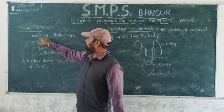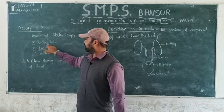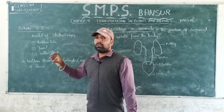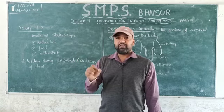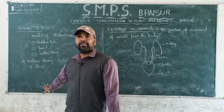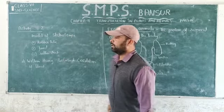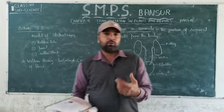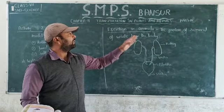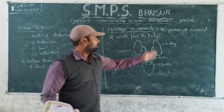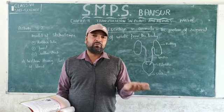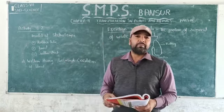In activity 11.2, you have to make a model of a stethoscope. For this you need a rubber tube, a funnel, and a rubber sheet. The rubber sheet is used for absorbing the vibration of the heart. After this activity, we will study details about William Harvey, the discoverer of the circulation of blood, and then excretion in animals, excretion in humans, and the human excretory system — basically the removal of waste from the cells of the body.